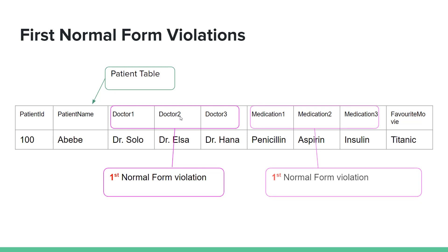We have a violation with medication 1, medication 2, medication 3. We have a lot of repeated information. When we have this situation, we have a violation of the normal form and we can fix it.